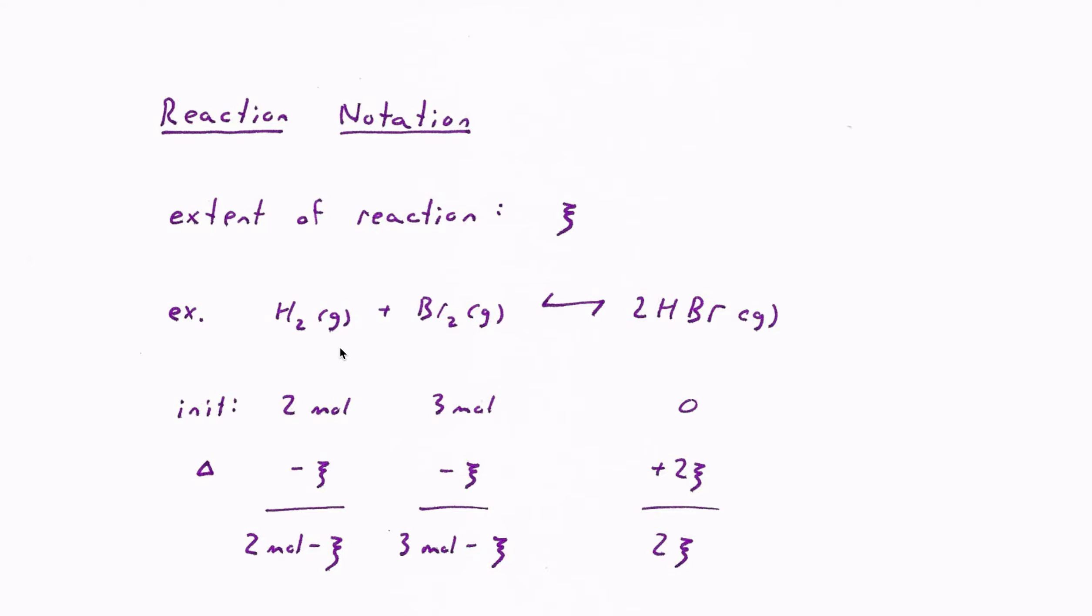For example, if we stick with this reaction of H2 and Br2 forming HBr, if I say the reaction has happened to an extent that 100 molecules of H2 and 100 molecules of Br2 have formed 200 molecules of HBr, then the reaction has happened 100 times and the value of XI would be 100.